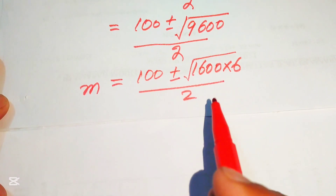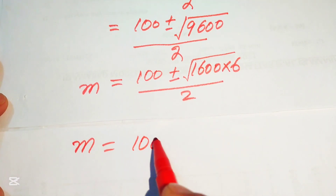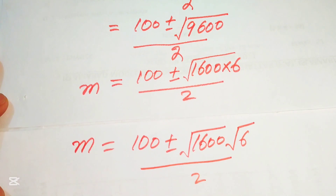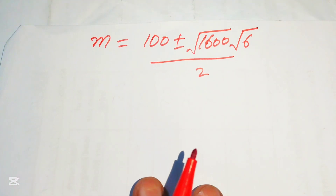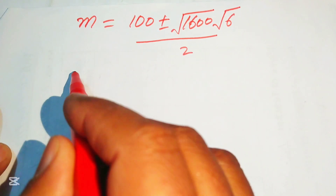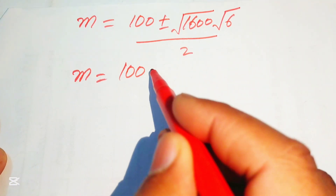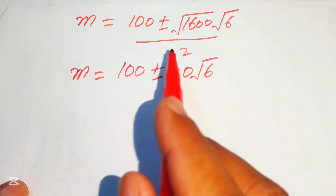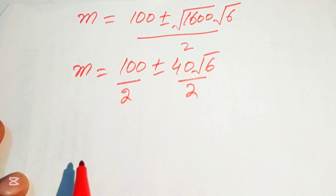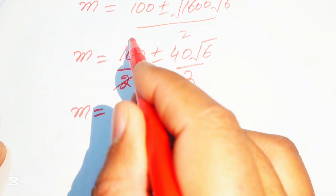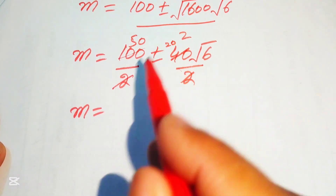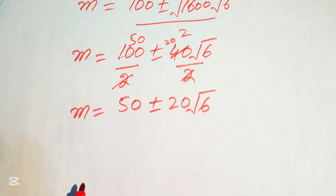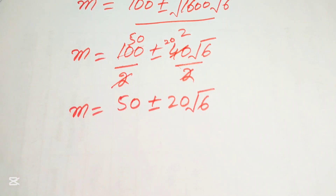We rewrite 9,600 as 1,600 multiplied by 6, since 16 times 6 equals 96 and thus 1,600 times 6 equals 9,600. Breaking the square root: square root of 1,600 equals 40, so we have m equals 100 plus or minus 40 times square root of 6, all divided by 2. Simplifying the fraction gives m equals 50 plus or minus 20 times square root of 6.